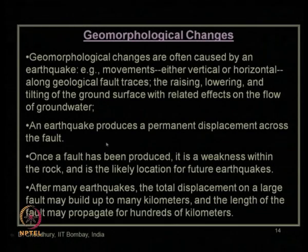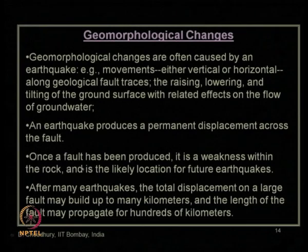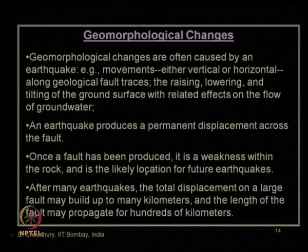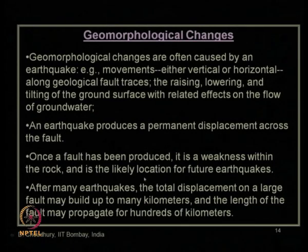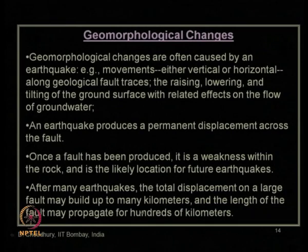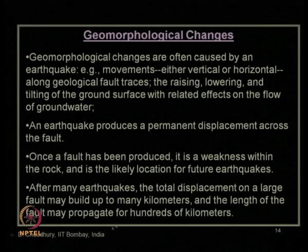An earthquake produces a permanent displacement across a fault. Once a fault has been produced, it remains as a weakness within the rock forever — it can never be removed. Those are the points where future earthquakes can occur. After many earthquakes, the total displacement on a large fault may build up to many kilometers, and the length of a fault can extend to hundreds of kilometers.